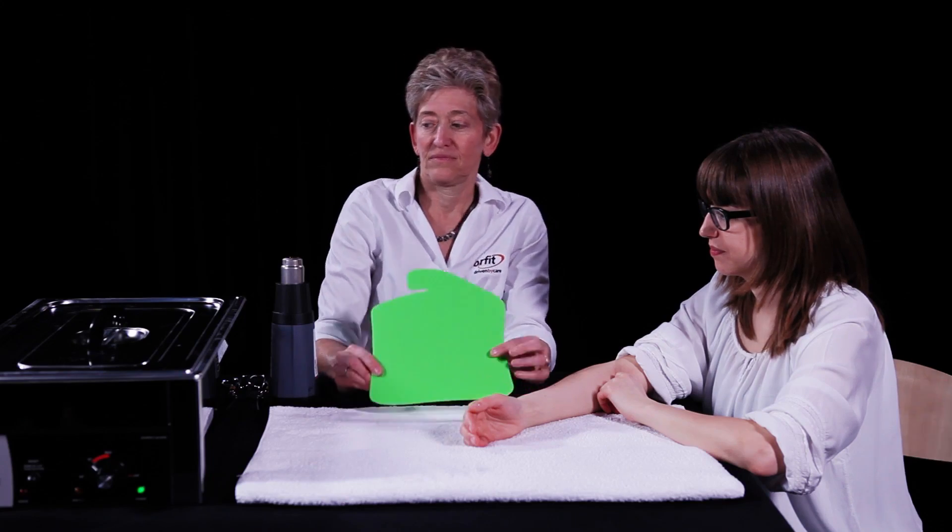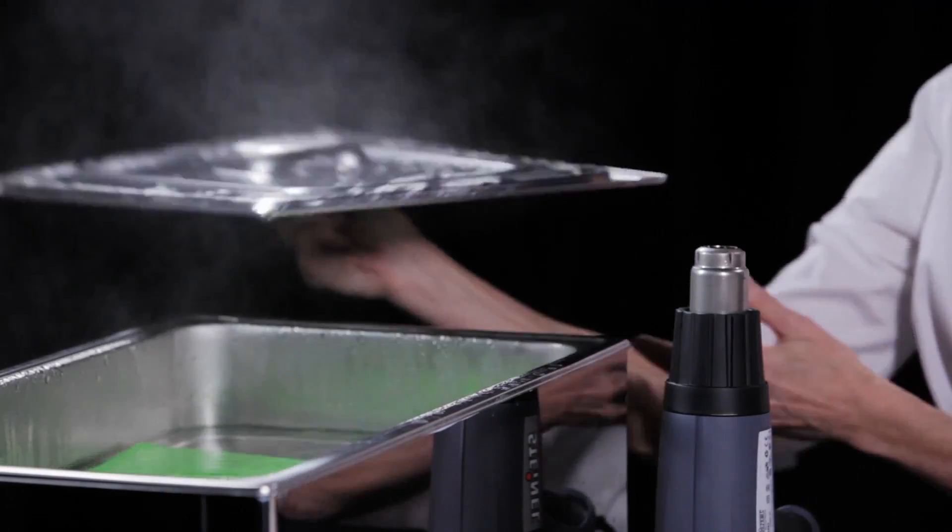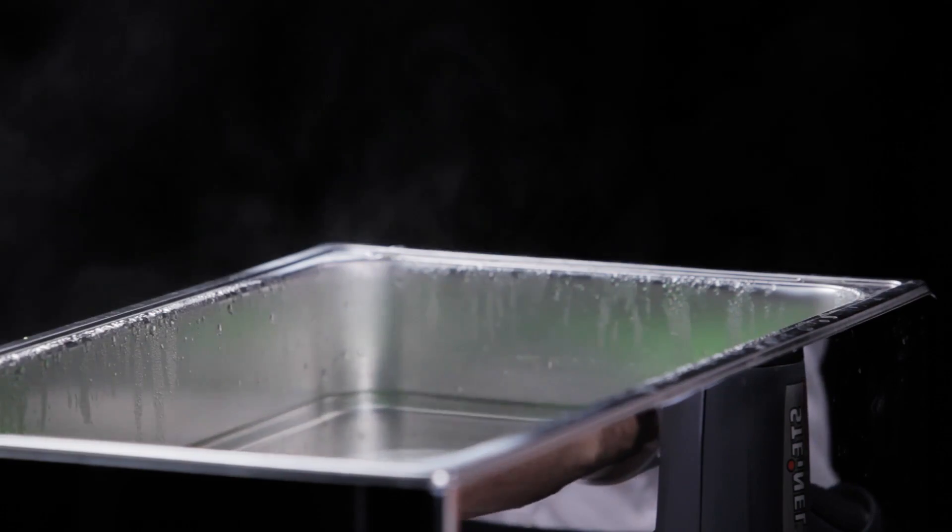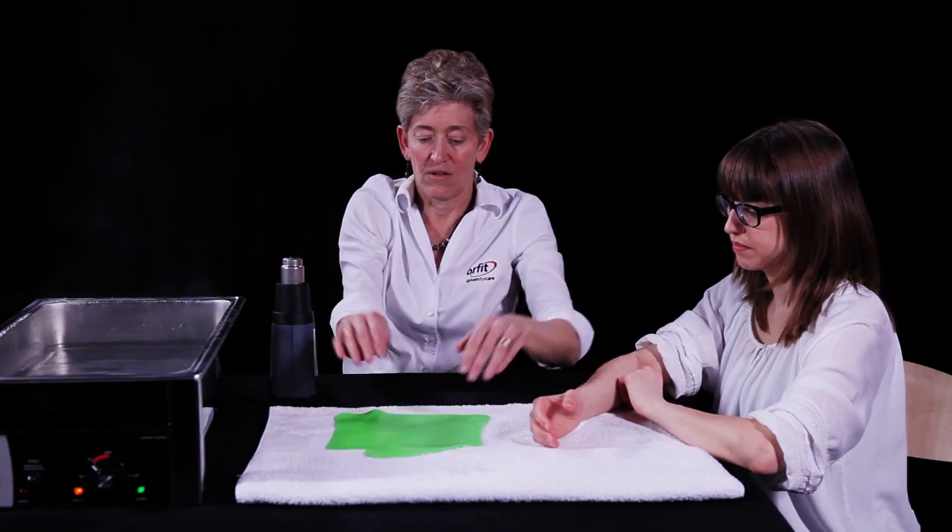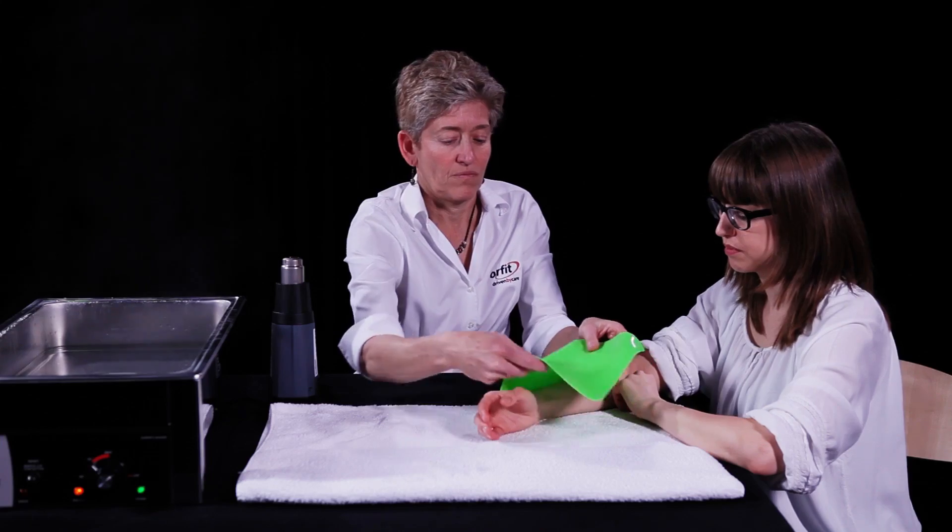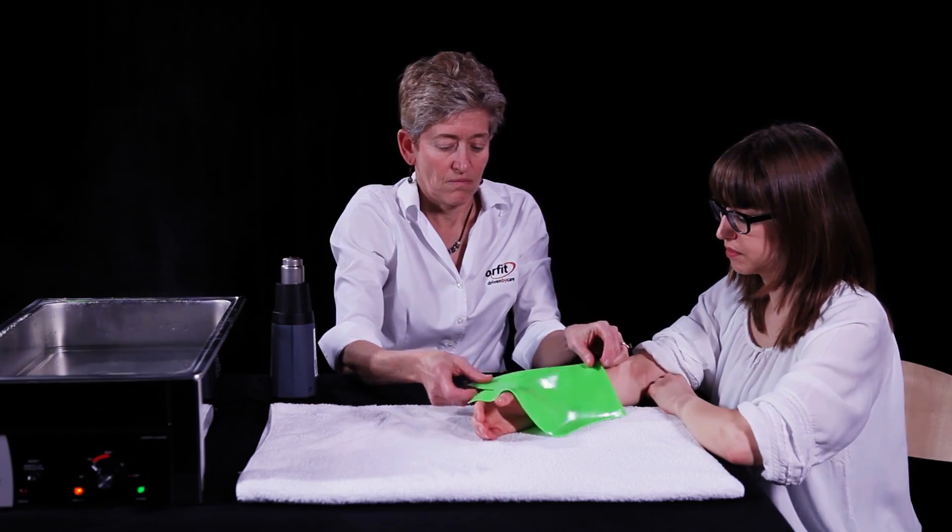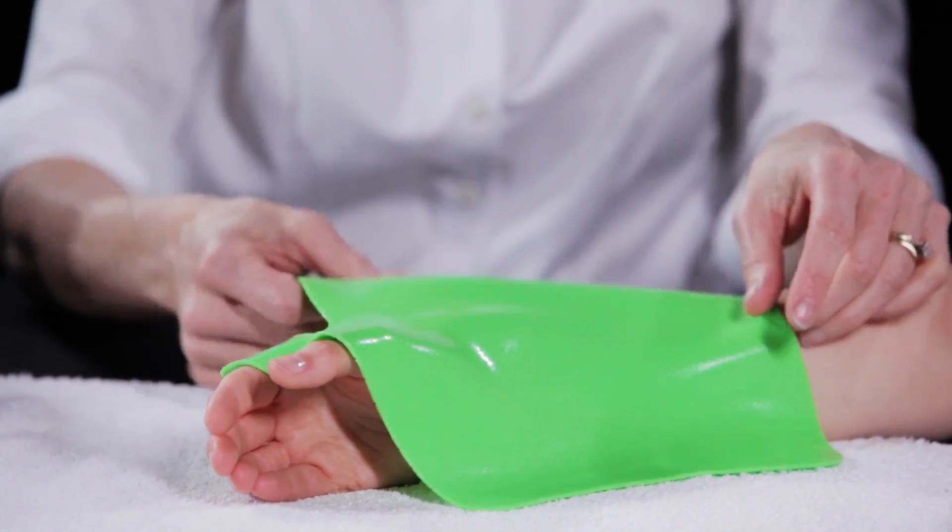The pre-cut is placed in the hot water bath to activate the thermoplastic material. Place the pre-cut over the patient's forearm, aligning the correct volar and dorsal surfaces. Place the tab cut out in the first web space.